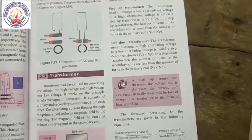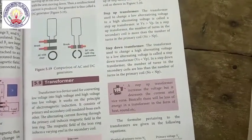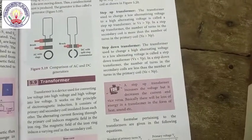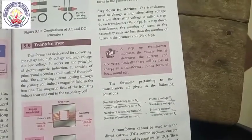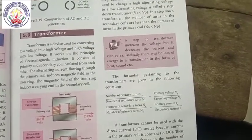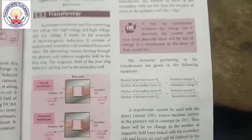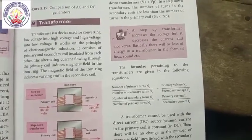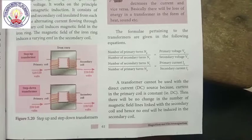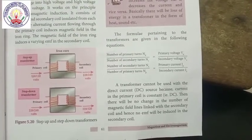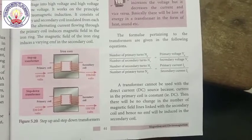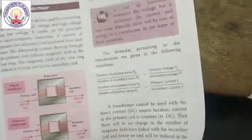A step-up transformer increases voltage but decreases the current, and vice versa. There will be some loss of energy in a transformer in the form of heat, sound, etc. The formulas pertaining to transformers are: Np divided by Ns equals primary voltage Vp divided by secondary voltage Vs. Also, Ns divided by Np equals primary current Ip divided by secondary current Is. A transformer cannot be used with a direct current DC source because DC current in the primary coil is constant — there is no change in the number of magnetic field lines linked with the secondary coil, and hence no EMF is induced.